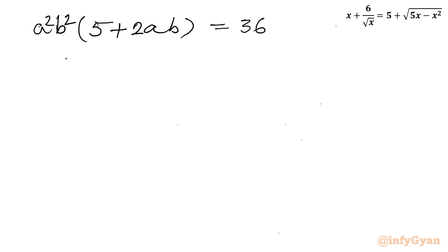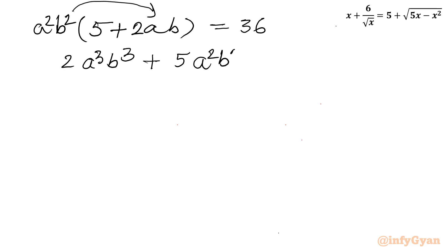So the equation becomes (5 + 2ab)(a²b²) = 36. Let us expand: 2a³b³ + 5a²b² = 36. This is a cubic equation in ab, so let us consider ab = k.